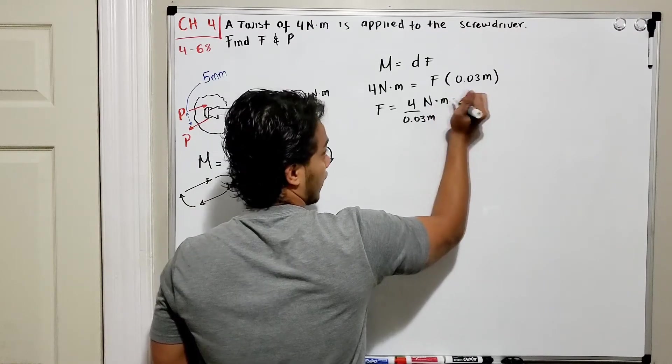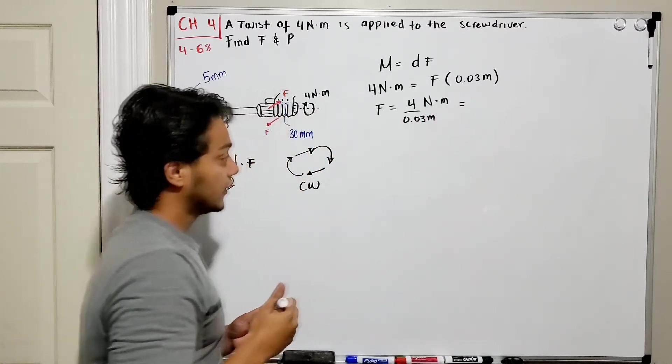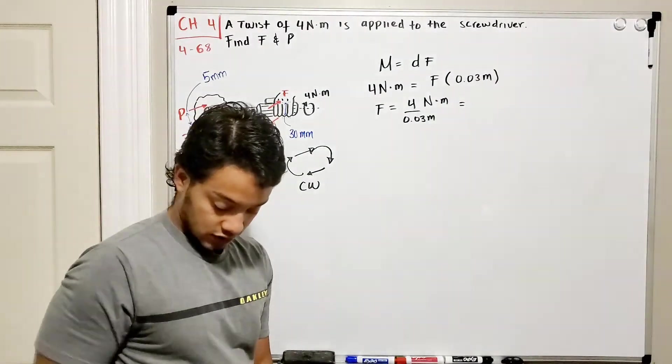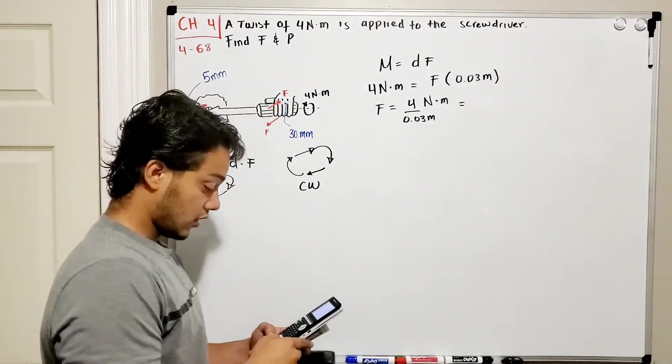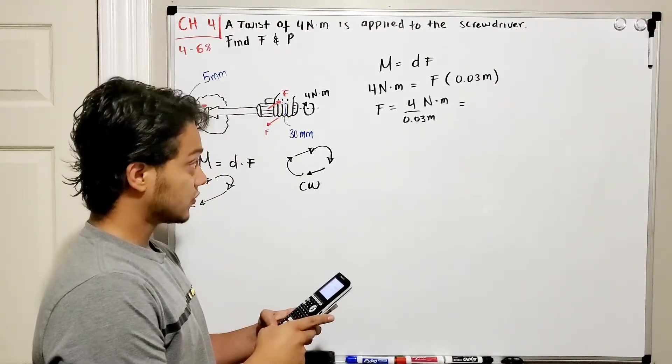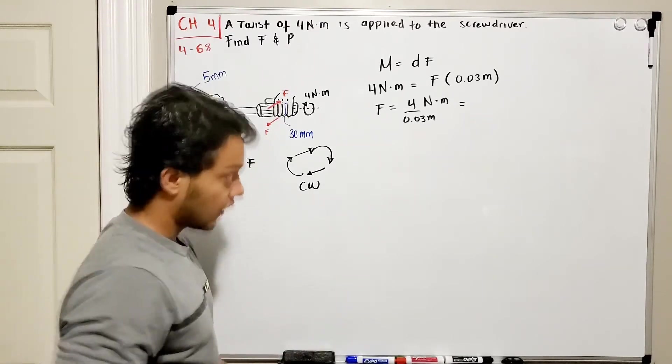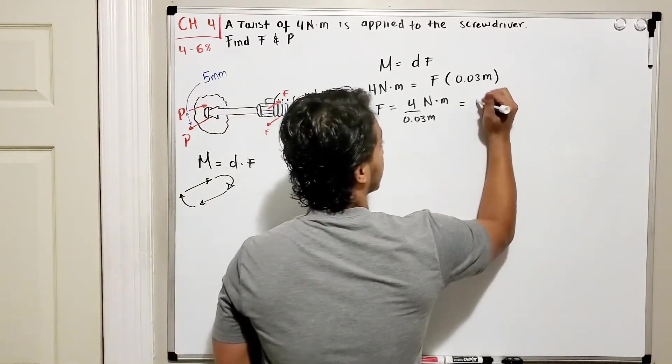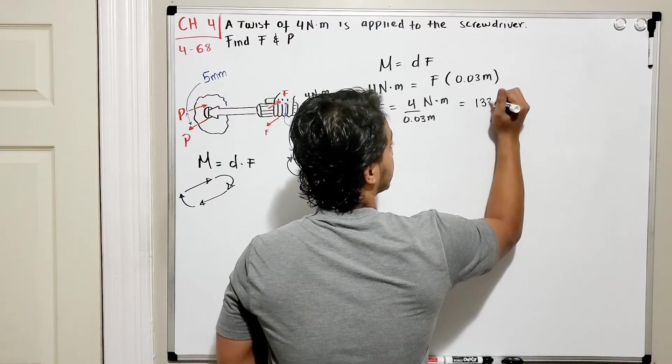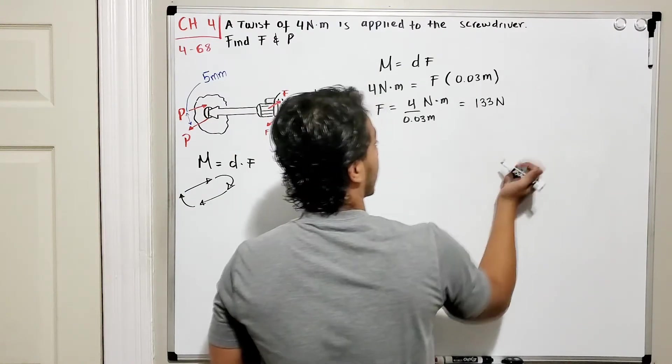Now we will find that out. If we use our calculator, we found that 4 divided by 0.03 is equal to 133 newtons. So we found our force F.